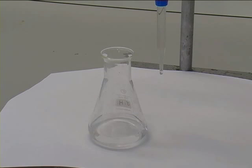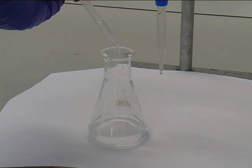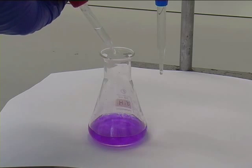Measure out a precise volume of your unknown concentration solution and add an indicator. In this case, phenolphthalein is used.